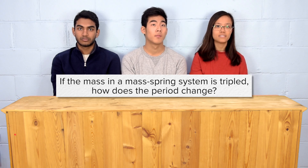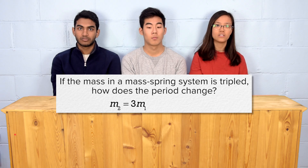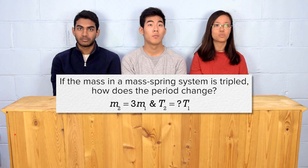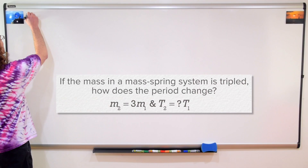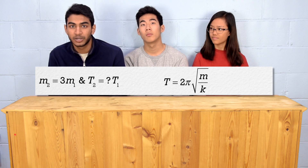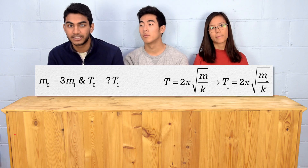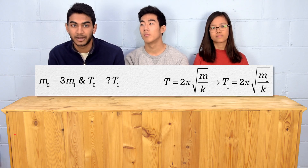We know the mass is tripled, so that means mass 2 equals 3 times mass 1. And we're solving for period 2 in terms of period 1, so period 2 equals question mark times period 1. Anish, please solve the problem. We know the period of a mass-spring system equals 2π times the square root of the mass divided by the spring constant. That means period 1 equals 2π times the square root of mass 1 divided by the spring constant.